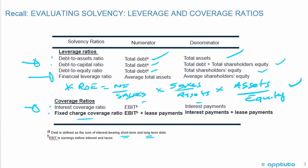Moving on to the interest coverage ratio: on the income statement, earnings before interest and tax (EBIT) is the numerator, and interest expense is the denominator — it's the next line. The fixed-charge coverage ratio is straightforward: we simply add lease payments to both the numerator and denominator of the interest coverage ratio.